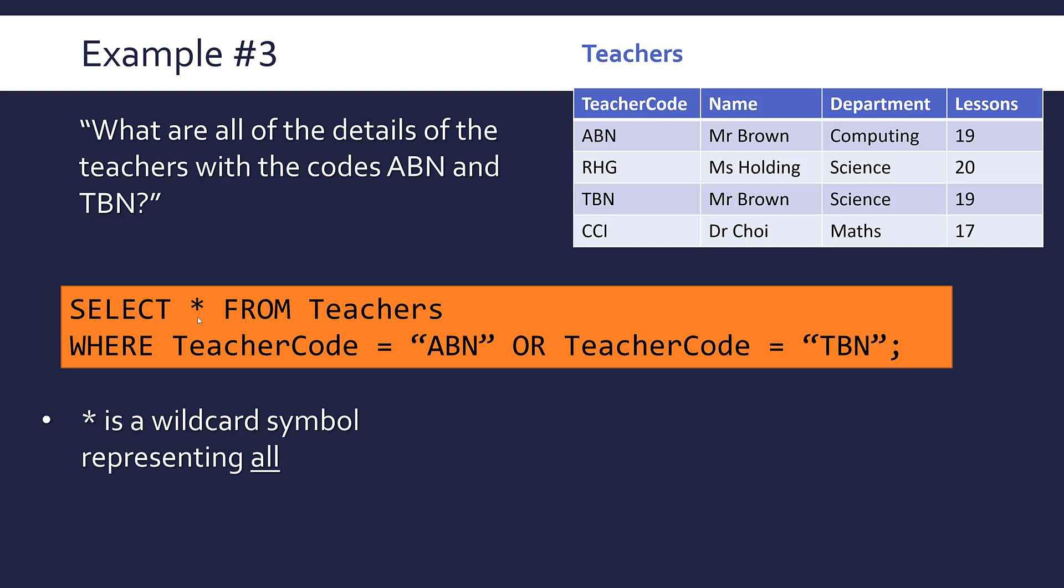The star or asterisk is shorthand for all. The asterisk in SQL at least represents all. So when you see a star, think all. So really it's saying select all from teachers. Select all fields from teachers. These are called wild cards. A wild card is where you've got a symbol representing something else. There are a few more, but this is by far the most useful for select.